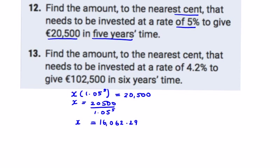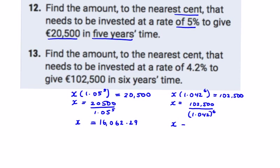Then the amount to the nearest cent that needs to be invested at a rate of 4.2 percent — same question structure: x multiplied by 1.042 to the power of six equals €102,500. So the amount of money invested equals the end amount divided by one plus the interest rate, to the power t, where t is years. So x in this case works out to approximately €80,078.80.